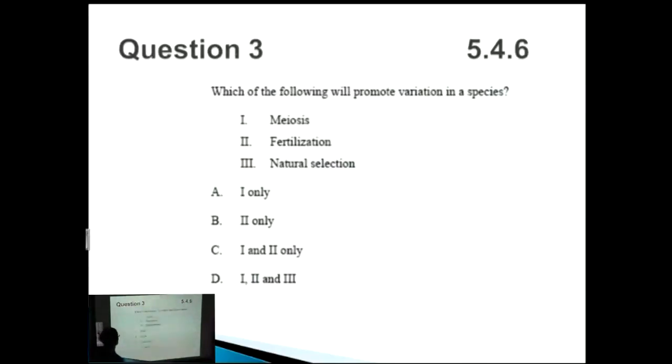Question three. Which of the following will provoke variation in a species? So luckily if you looked at question one prior, we talked about things that did cause variation. And remember when you think of variation you have to think of birth. When you think about increase in variation you think of birth and sexual reproduction. When you're thinking about decrease in variation you have to think about death or natural selection.